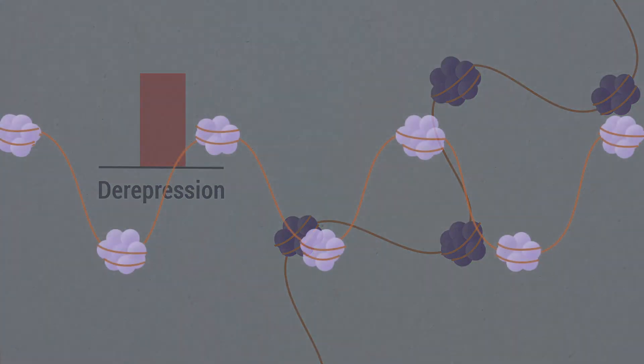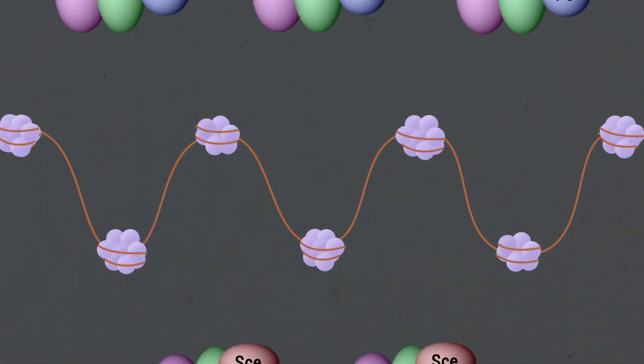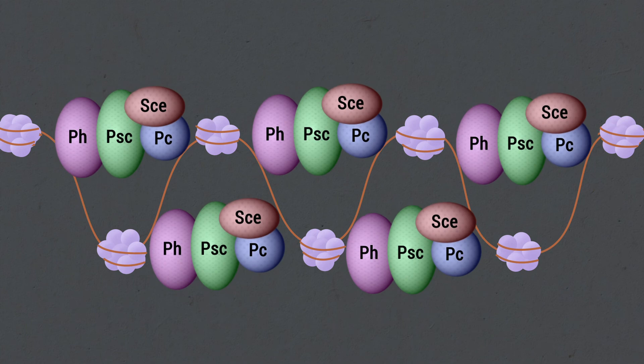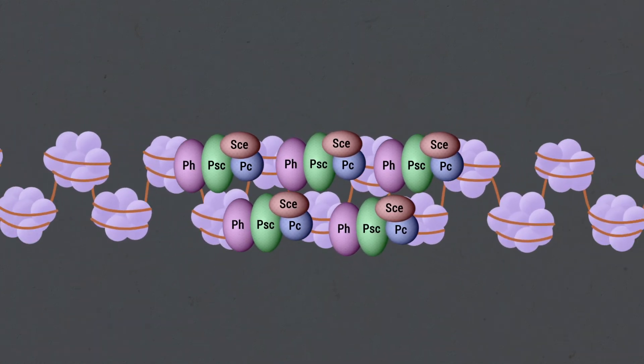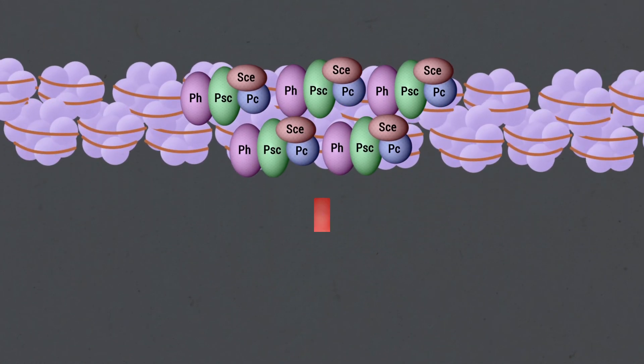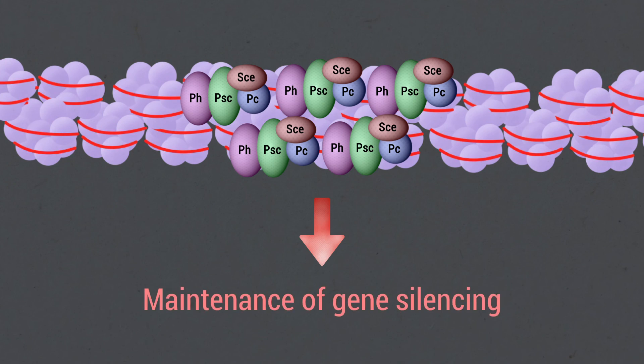Taken together, our data suggest that PRC1 maintains gene silencing by folding chromatin domains, imposing an architectural layer to gene regulation.